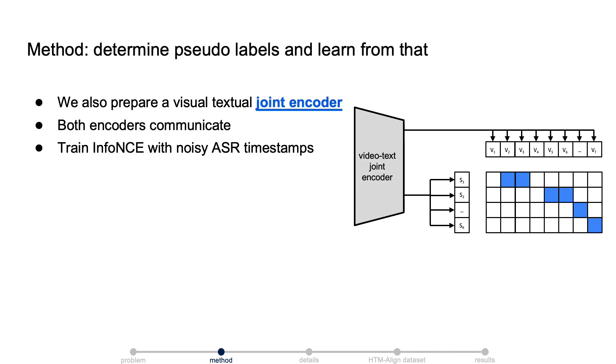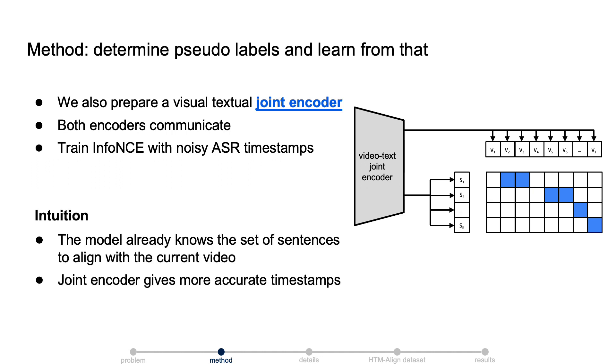The second component is a visual-textual joint encoder. In this component, the video and text are jointly encoded. Same as before, it can be trained with an infoNCE loss on the noisy ASR timestamps. Intuitively, the model already knows the set of sentences to align with the current video, so the joint encoder might give more accurate timestamps.